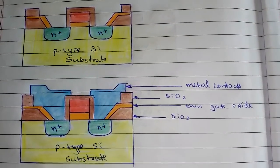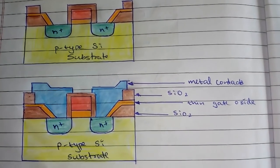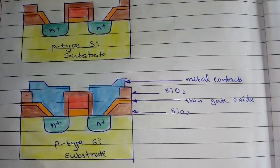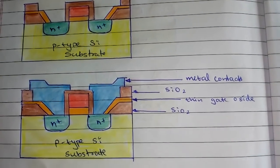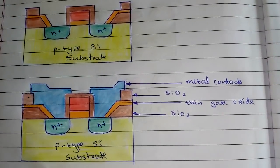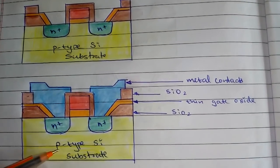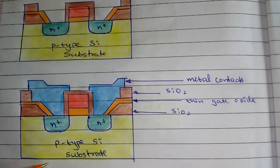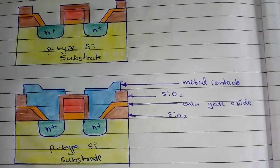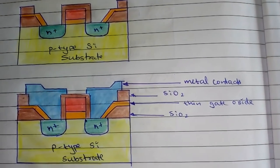If in an exam you are asked to fabricate a PMOS transistor, nothing changes — all the steps remain the same. The only two differences are: instead of a p-type silicon substrate you use n-type, and instead of n+ regions you use p+ regions. Making these two changes gives you PMOS transistor fabrication.